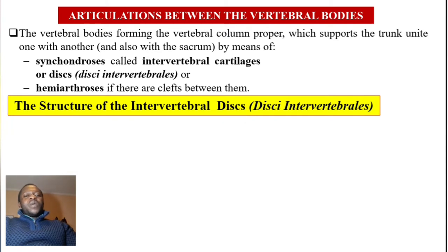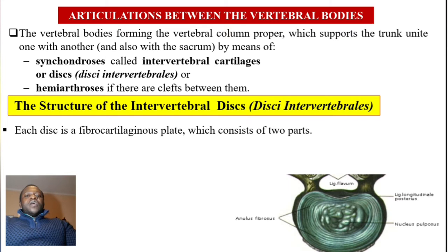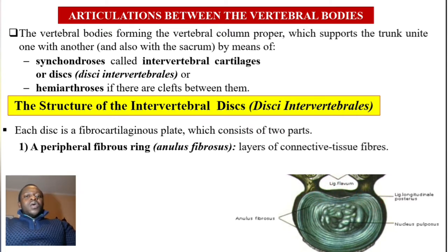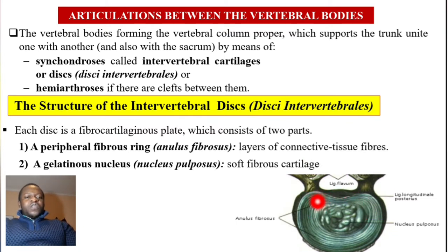Let's talk more about the intervertebral disc — the structure of the vertebral disc. Each disc is a fibrocartilaginous plate which consists of two parts: the first one is the peripheral fibrous ring, the annulus fibrosis — a layer of connective tissue around the outside; and the gelatinous nucleus, the nucleus pulposus, which is the inner part at the center — a soft fibrous cartilage.